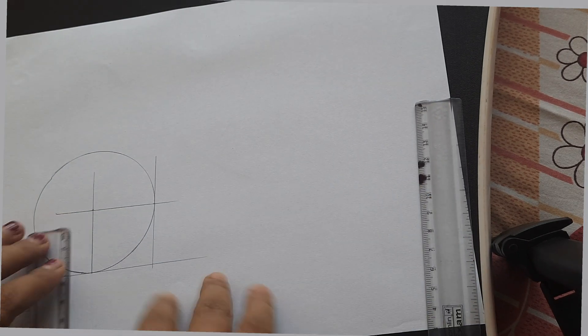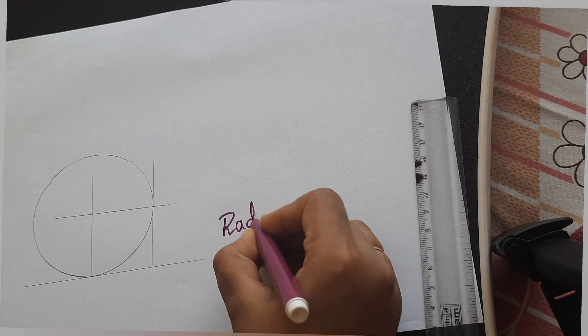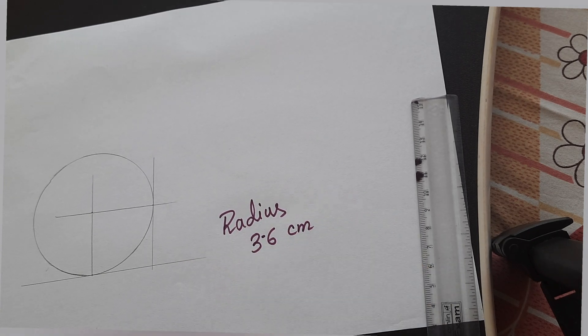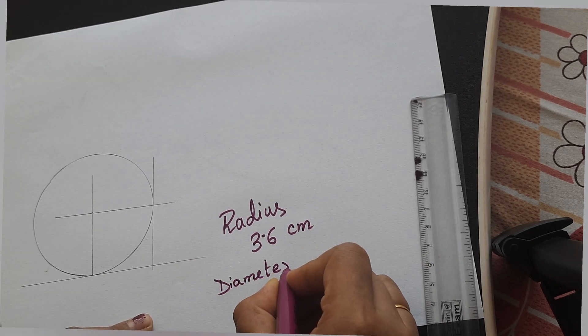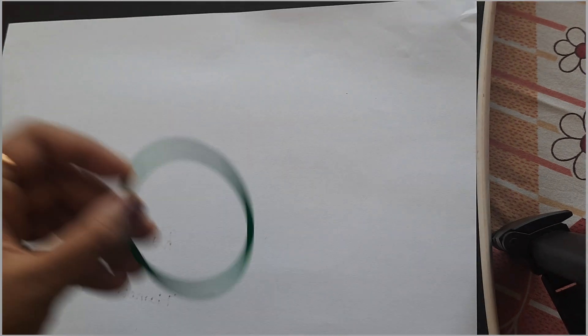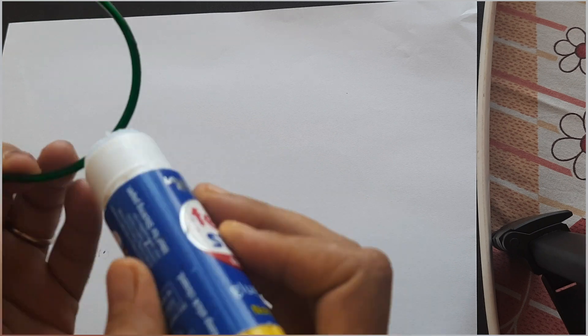Now I am measuring the radius. It is coming near about 3.6 centimeters. Hence the diameter will be 7.2 centimeters. Now I have to find out the circumference of the circle.